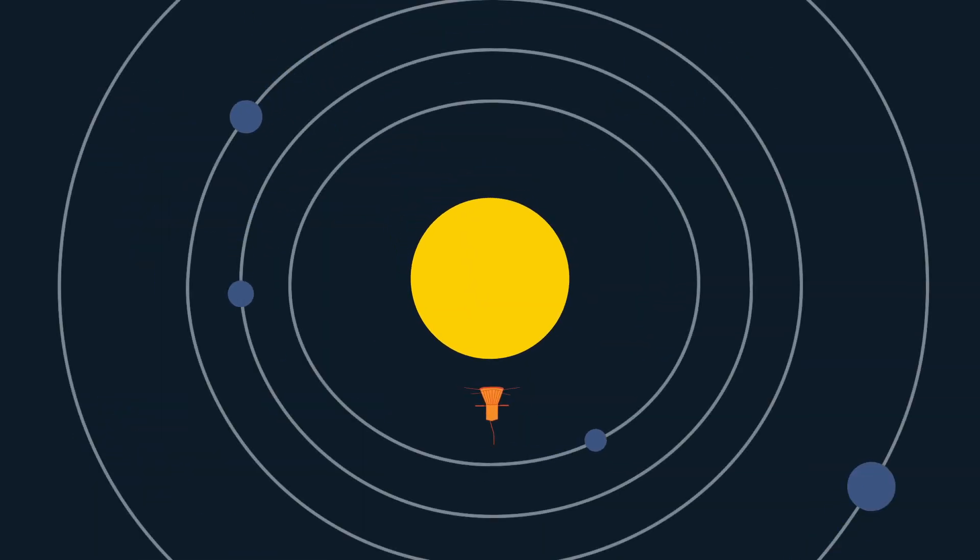So while Parker Solar Probe might be flying through one of the toughest places in space, it's designed to take the heat and keep its cool as it revolutionizes what we know about the sun.